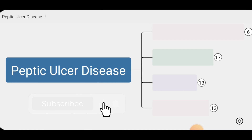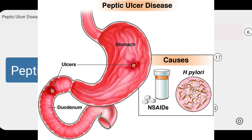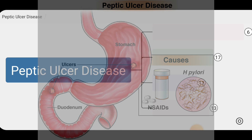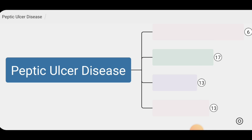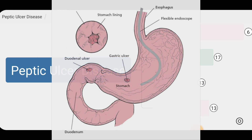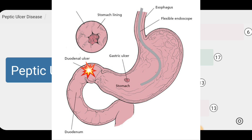Peptic ulcer disease is a common condition affecting the digestive system that occurs due to the formation of ulcers in the stomach and the duodenum, caused by gastric acid secretion or pepsin. Gastric ulcers are commonly located on the lesser curvature between the antrum and fundus, while most duodenal ulcers are located in the first part of the duodenum.